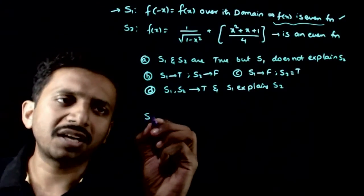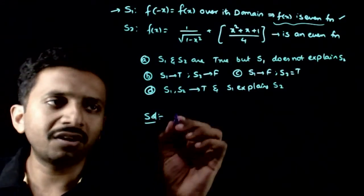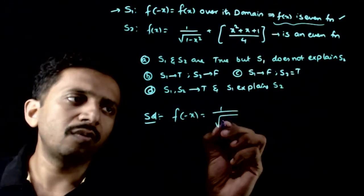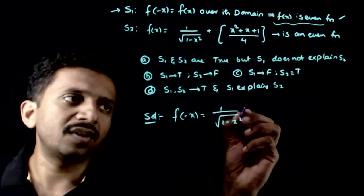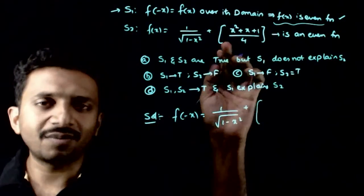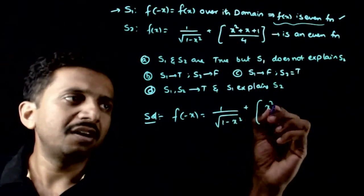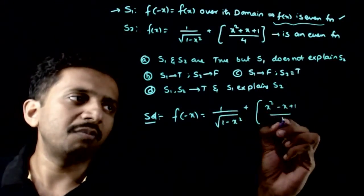If you have to check whether a given function is even or not, just put -x in place of x. So 1/√(1-(-x)²) equals 1/√(1-x²), but the integer part becomes [(-x)² - x + 1/4] = [x² - x + 1/4].